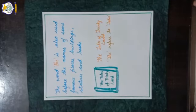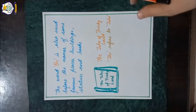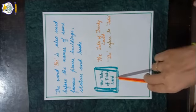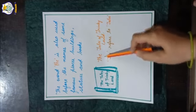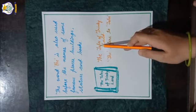The word 'the' is also used before the names of famous places, buildings, statues, and books. So Shivvy's favorite book is called 'The Tales of Trinky Land'. Here 'the' is used to point out the noun 'tales' — it specifically refers to the tales or stories of Trinky Land.